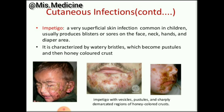Staph aureus also causes impetigo. It is a superficial skin infection common in children, usually producing blisters or sores on the face, neck, hands, and diaper area. It is characterized by watery vesicles which become pustules and then honey-colored crust. Impetigo presents with vesicles, pustules, and sharply demarcated regions of honey-colored crust.